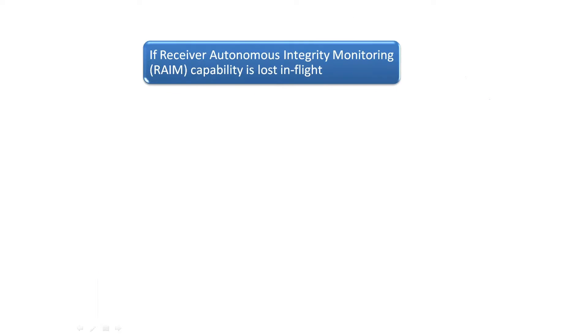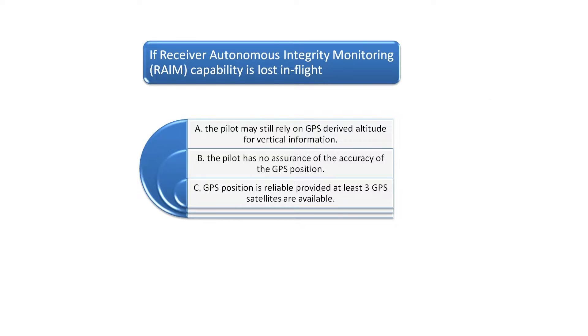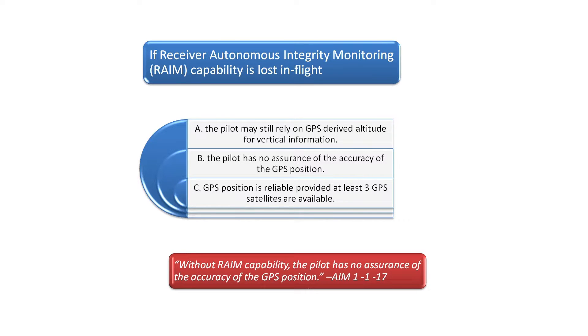If receiver autonomous integrity monitoring capability is lost in flight. See chapter one of the Aeronautical Information Manual in the section on navigational aids to find that without RAIM capability, the pilot has no assurance of the accuracy of the GPS position. The correct answer is B.